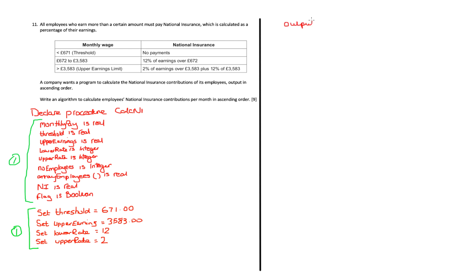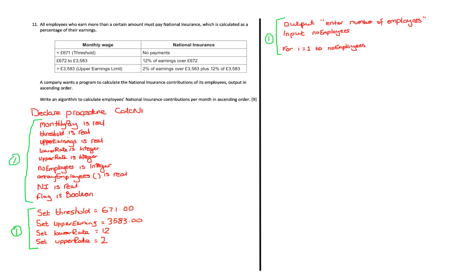The next step is to output a message asking the user to enter the number of employees, then take an input and store it in the `no_employees` variable. Using this value, I can iterate through the number of employees to determine which national insurance contribution each one is required to pay, with each check being a selection statement.